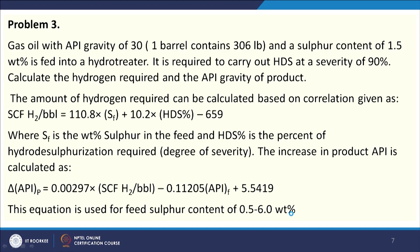Now coming to Problem 3. Gas oil with API gravity of 30 — one barrel contains 306 pound — and a sulfur content of 1.5 weight percent is fed into a hydrotreater. It is required to carry out hydrodesulfurization at a severity of 90%. Calculate the hydrogen required and the API gravity of the product.